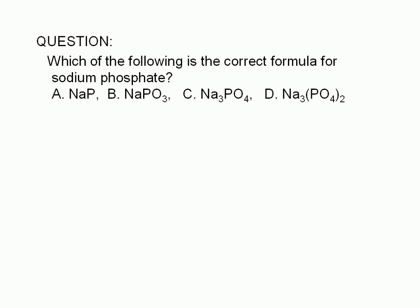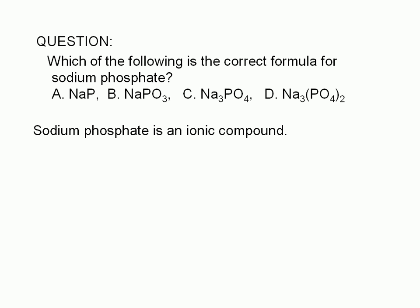To determine the formula of a compound given its name, we need to first classify the compound, then apply the rules for that type of compound. Sodium phosphate is an ionic compound. We know it's ionic because sodium is a metallic element. Cations are generally derived from metallic elements.